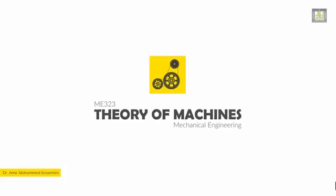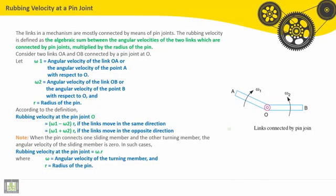بسم الله الحمد لله والصلاة والسلام على رسول الله. السلام عليكم ورحمة الله وبركاته وأهلا ومرحبا بكم في هذا الجزء الثامن من المحور الثالث لمادة نظرية الآلات Theory of Machines. Here I will explain rubbing velocity at a pin joint.